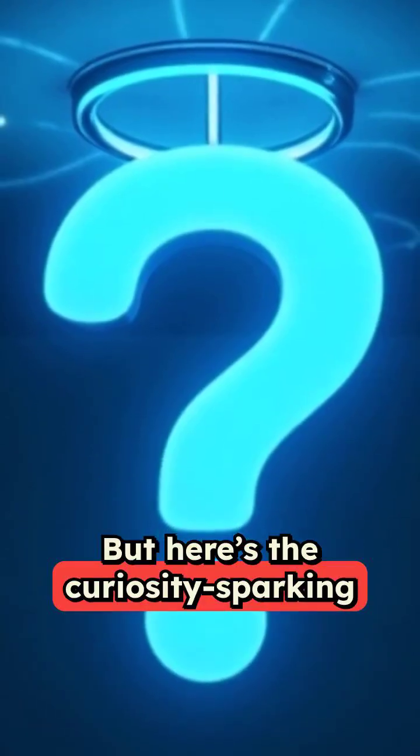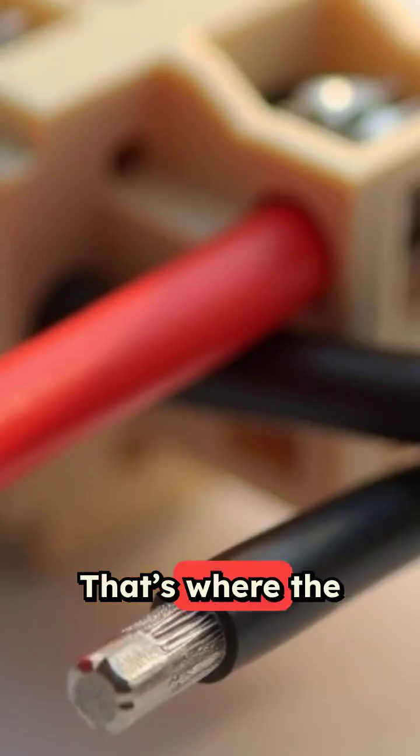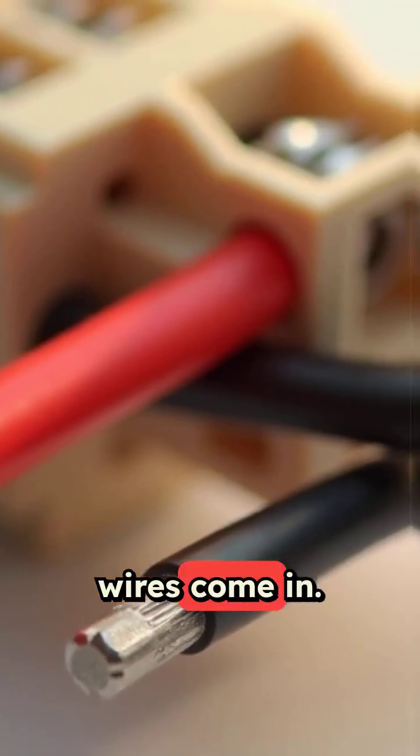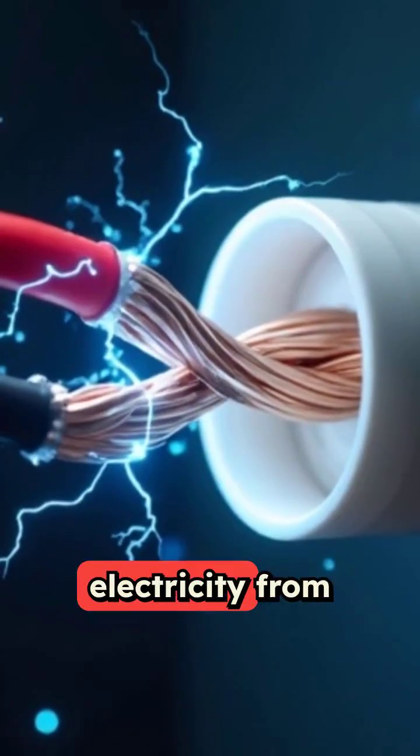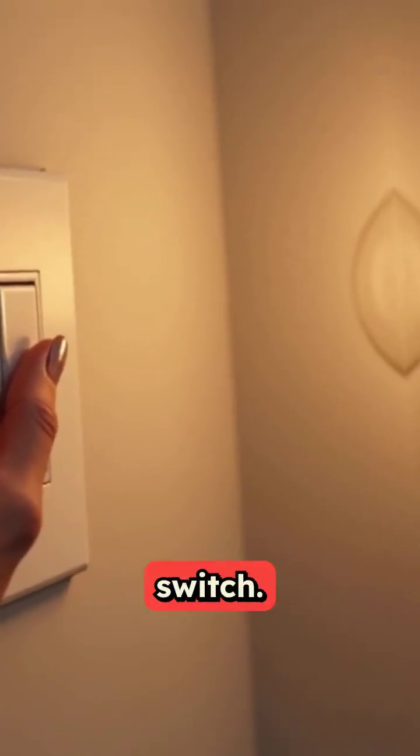But here's the curiosity sparking question. How does the power know where to go? That's where the live and neutral wires come in. These wires channel electricity from the circuit into the socket, activating the bulb when you flip the switch.